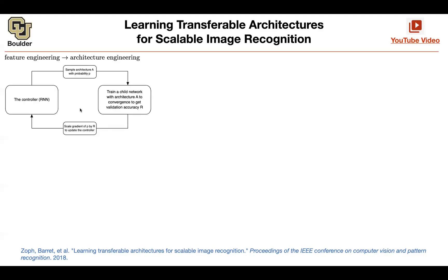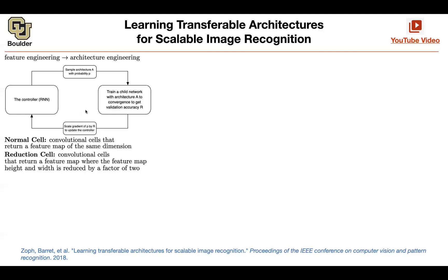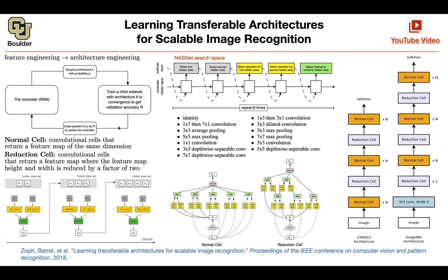This was an assignment for you to watch. Any questions about it? The framework is still the same as before: you have a controller RNN, sample architectures, train, adjust your gradients. But this is about designing a search space, and in this case, it is the NASNet search space.